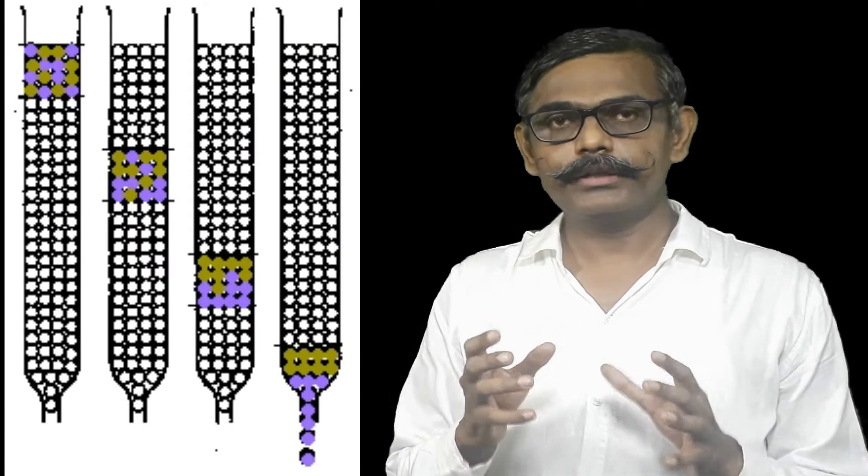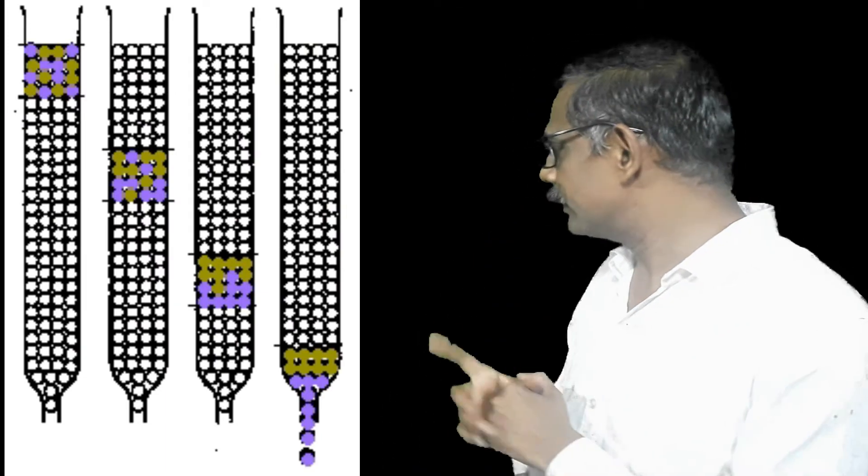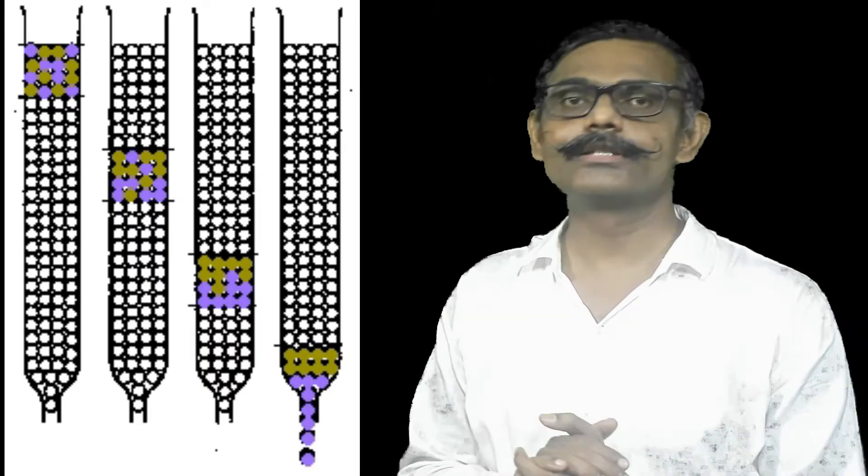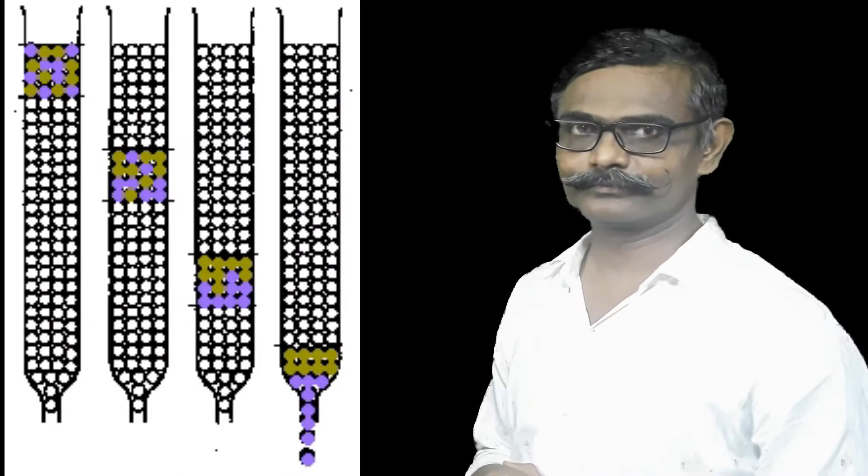Let us understand what the ion exchange method is and how we can apply it to separate ions. In this method, there remains a resin in granule form. As shown in the diagram, these granules are kept in one solvent, shaken out, and then filled into a burette — forming a resin column.